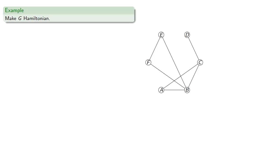For example, let's try to make this graph Hamiltonian. We note there are n equals six vertices, so we look for non-adjacent vertices whose degree sum is less than six.